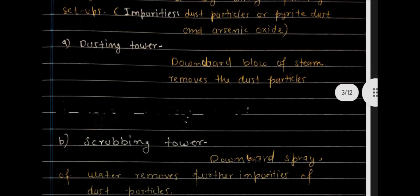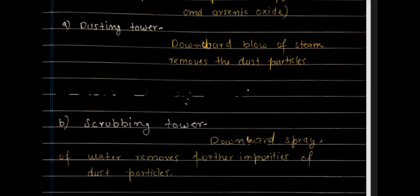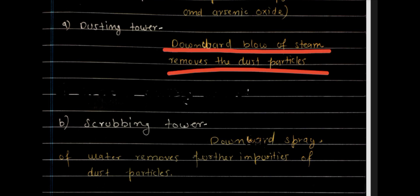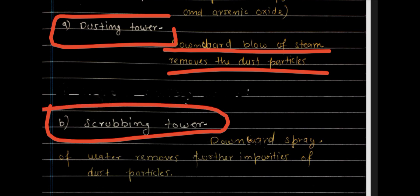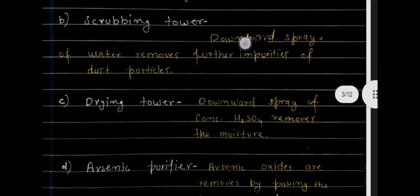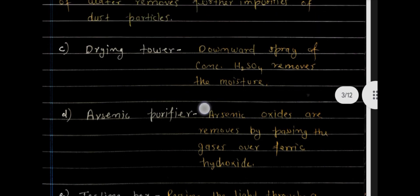The purification involves different towers. In the dusting tower, a downward blow of steam removes dust particles. In the scrubbing tower, a downward spray of water removes further dust impurities. In the drying tower, concentrated sulfuric acid is used as a drying agent to remove moisture.